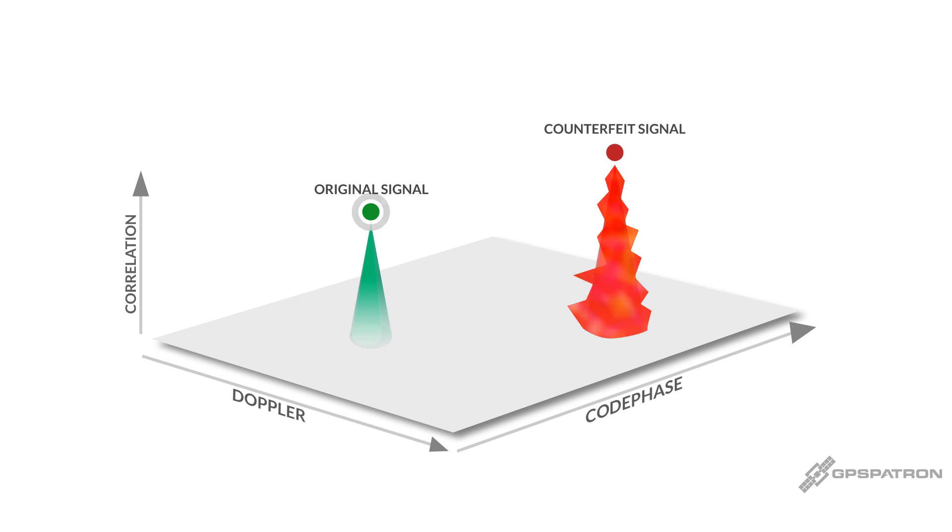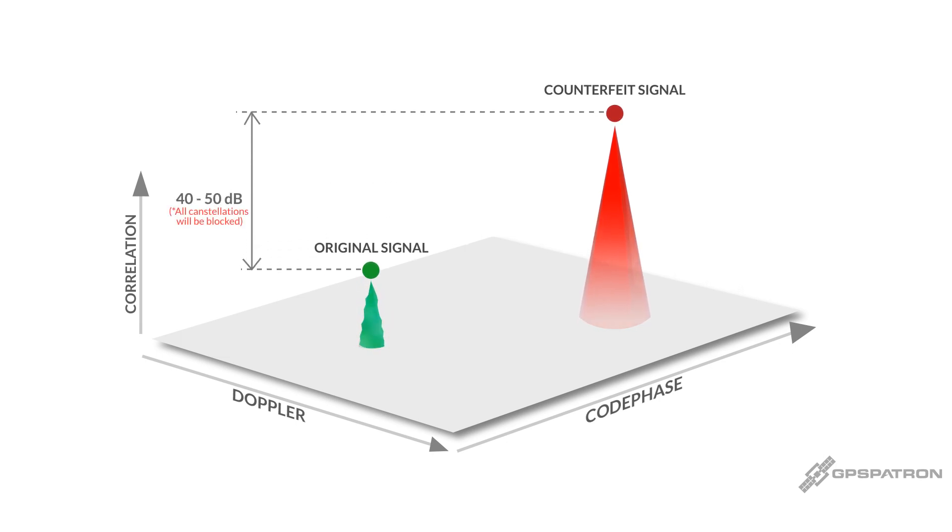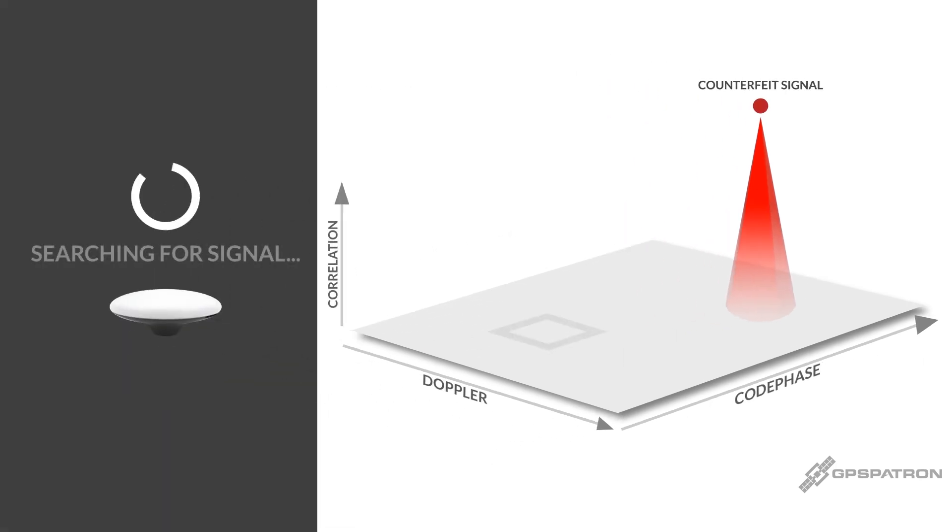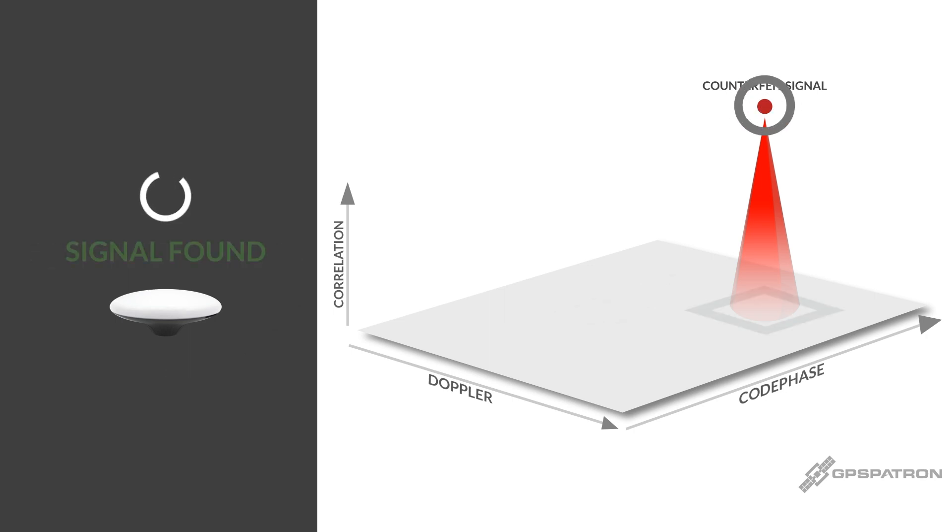To execute an asynchronous attack, an intruder needs to disrupt the genuine signals. This is achieved by broadcasting spoofing signals 40 to 50 decibels higher than the true satellite signals, forcing most receivers into search mode. Thereafter they lock onto the fake signals. Effortless, right?